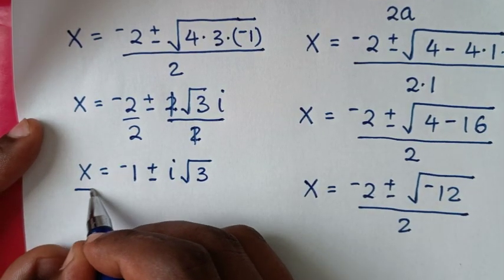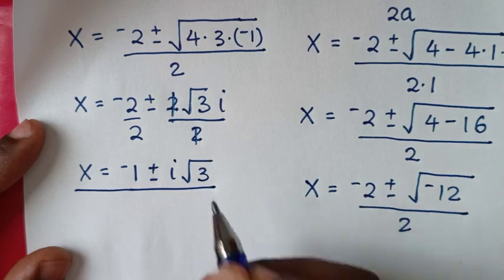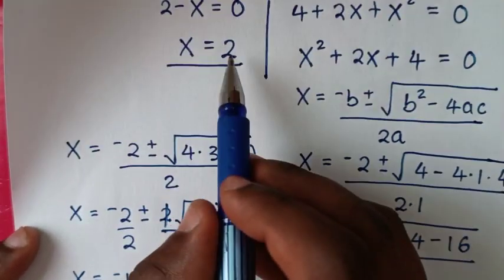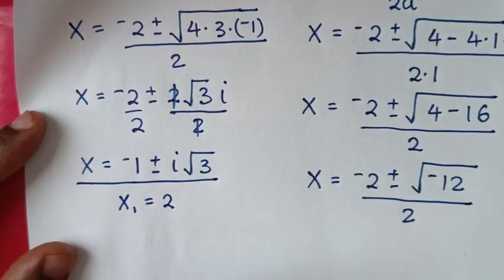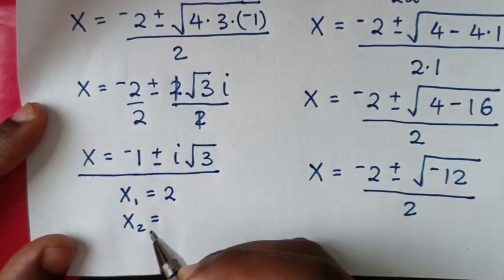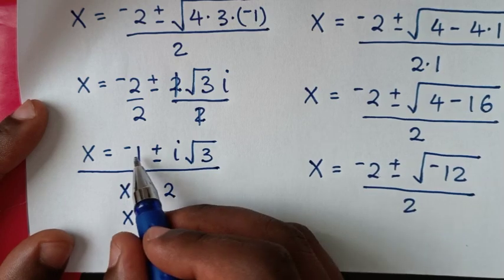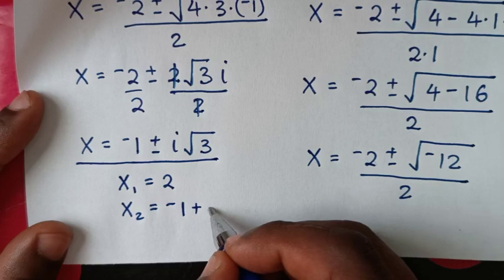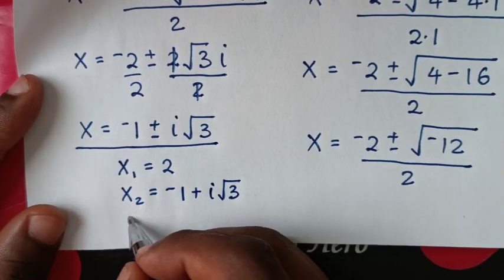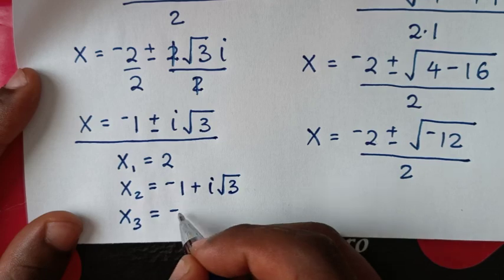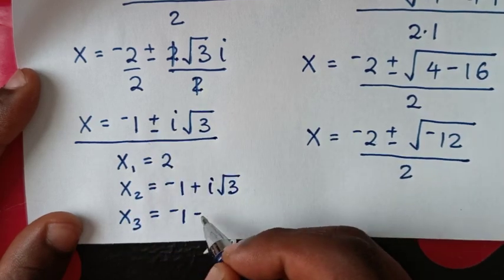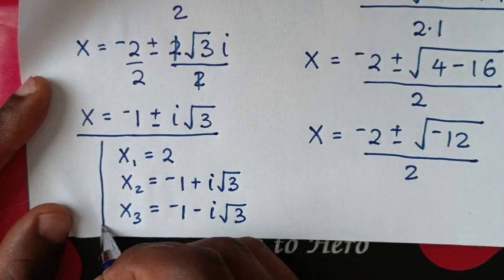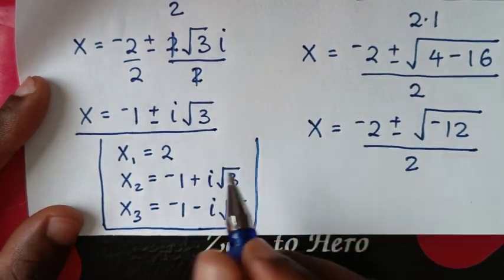So from here we have two complex solutions. Therefore, the first value of x is the real solution x equals 2, the second solution is the complex solution x equals negative 1 plus i times the square root of 3, and the third value of x equals negative 1 minus i times the square root of 3. These are all the values of x for this problem.